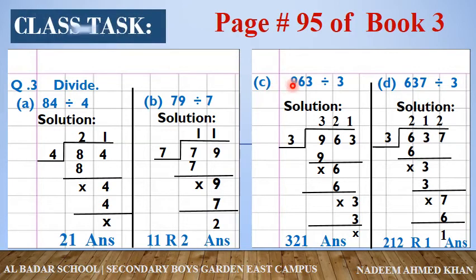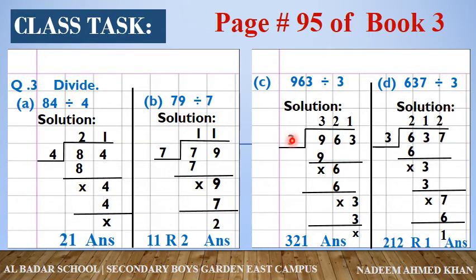C question है: 963 divided by 3। आपने divide की sign बनाई — 3 लिखा और 963 लिखा। 3 के table में 9 कितनी बार आता है: 3 × 3 = 9 — यहाँ 9 लिख दीजिए, 9 में से 9 subtract करें — कुछ नहीं बचा। Next number 6 bring down करें: 3 × 2 = 6 — 6 लिख दीजिए, 6 में से 6 subtract करें — कुछ नहीं बचा। Last number 3 bring down करें: 3 × 1 = 3 — 3 में से 3 subtract करें — कुछ नहीं बचा। Answer: 321।